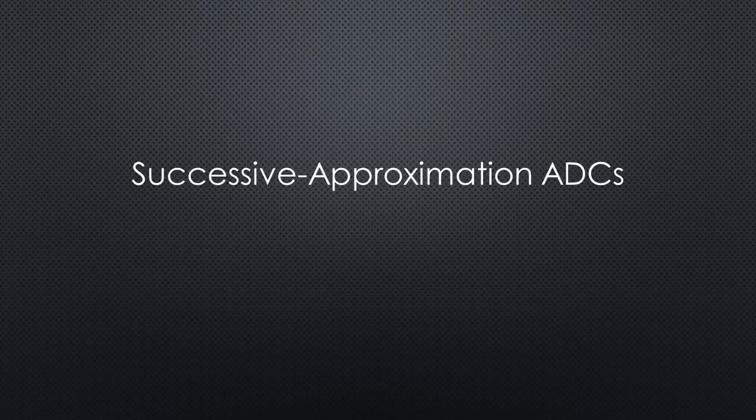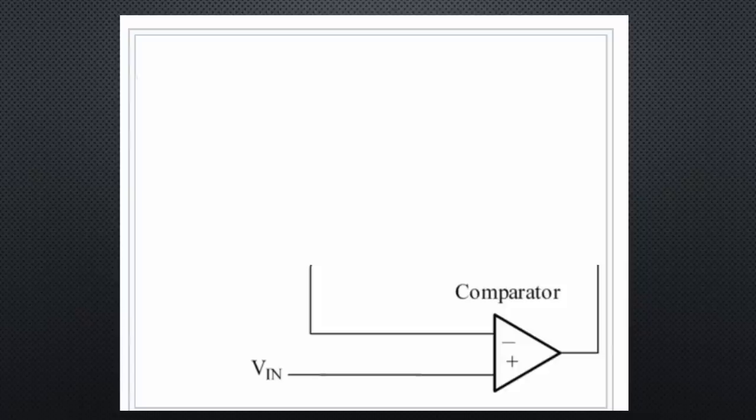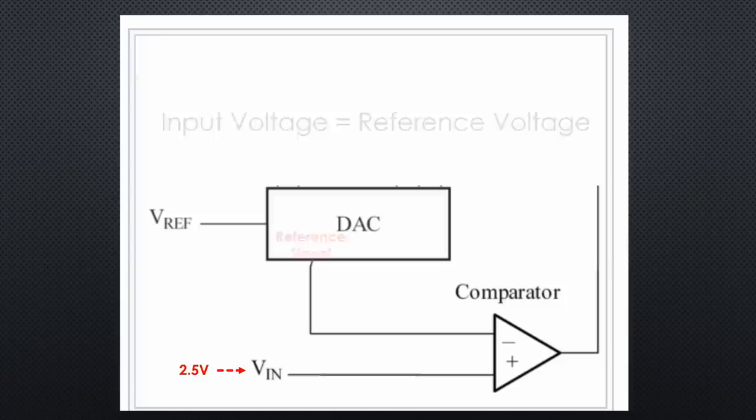Now we leave the expensive world of parallel comparator ADCs and continue with successive approximation ADCs. Their function, in a way, is very similar to what we saw before. The input signal is compared to a reference signal. What was done in parallel before is now done sequentially by only one comparator. Therefore, we have to supply it with an ever-changing reference signal. And it takes longer. Let's assume an input voltage of 2.5V. If our reference voltage starts at 0V and increases slowly, at precisely 2.5V, the comparator changes its output signal. If we knew the reference voltage, we would know the input voltage. Simple.